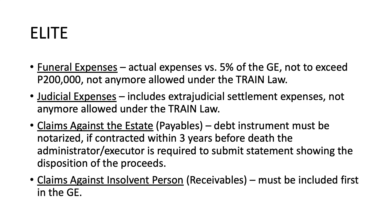Claims against insolvent persons are actually receivables of the decedent. During the lifetime of the decedent, there were amounts loaned to him — actually amounts he loaned to others — that he had not yet collected. For example, promissory notes he held because Juan dela Cruz owed him money. When he died, that amount will be included in the gross estate before you can deduct it as a deduction. Note: claims against the estate are the decedent's own debts, while claims against insolvent persons are debts owed to the decedent by others.